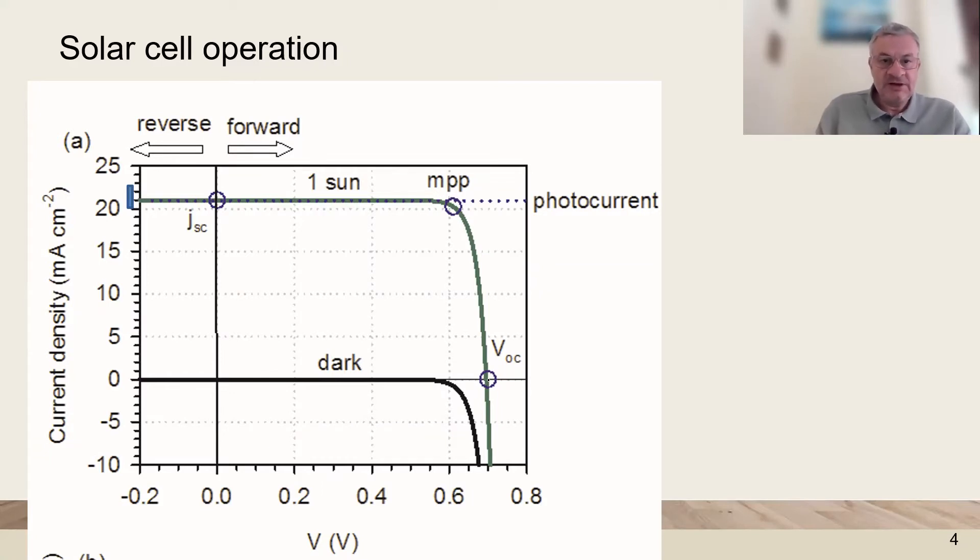There are two fundamental very important parameters. The short circuit current is the current at zero voltage and the open circuit voltage is the voltage at zero current. We will also discuss the maximum power point.